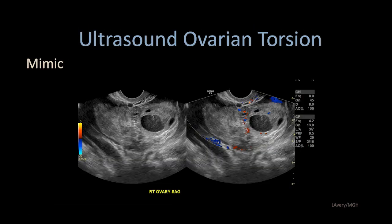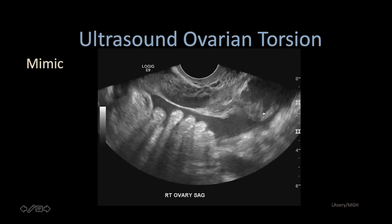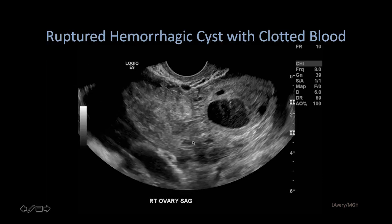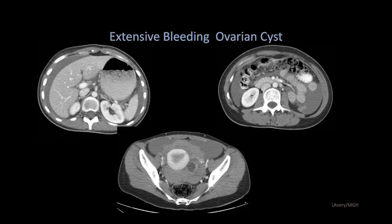Here's a mimic of ovarian torsion. We have a large right adnexal lesion with apparent follicles, but extending into the pelvis we see complex fluid in the cul-de-sac with internal echoes consistent with hemoperitoneum. Looking closer, there aren't actually follicles in this portion of the ovary, and on color blood flow, only part of the ovary shows flow. This is not a torsed ovary — this is a normal-sized ovary with a bleeding hemorrhagic cyst, large volume hemoperitoneum, and a dense heterogeneous blood clot adjacent to the ovary.